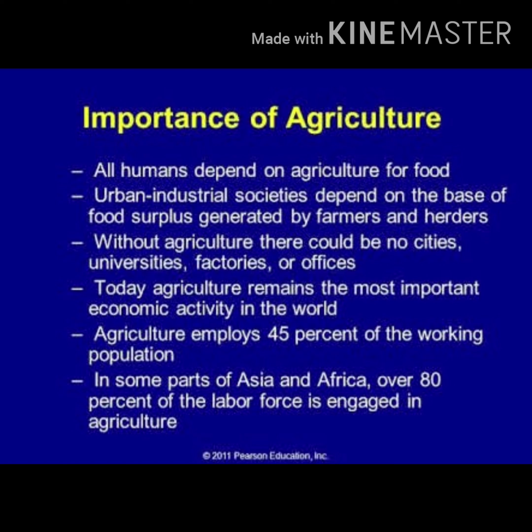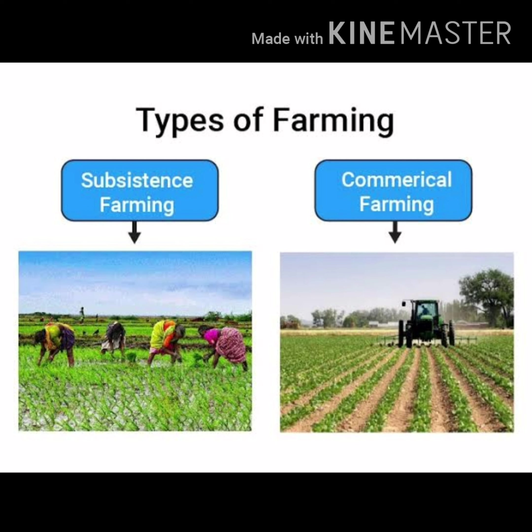There is a difference between types of farming and different forms of agriculture. When talking about types of farming, there are two types: subsistence farming and commercial farming. When talking about types of agriculture, there are different categories such as sericulture, pisciculture, viticulture, and horticulture.